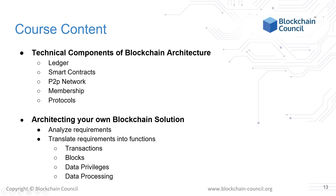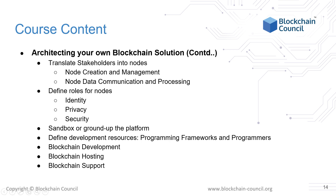We will look at best practices for analyzing requirements and translating them into functions. Once requirements and functions are identified, we can start building the blockchain application by translating stakeholders into nodes to manage the network. We can give privileges to certain nodes and define roles for different node types. We'll also define development resources — the different programming frameworks and languages to be used — and finally move on to actual development and hosting.